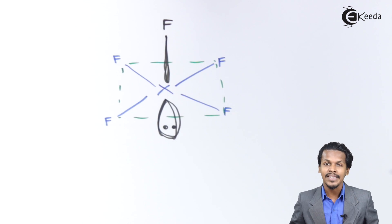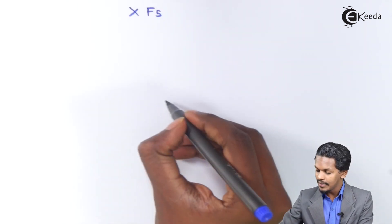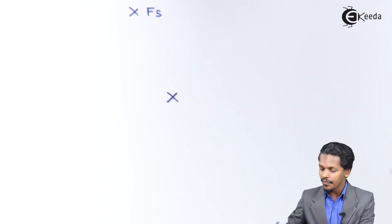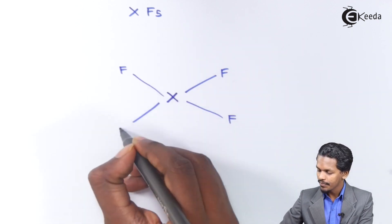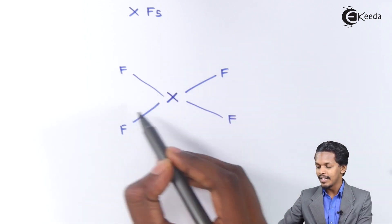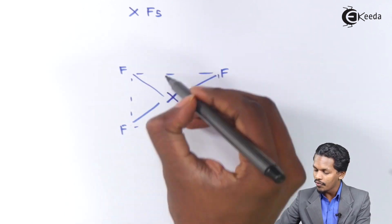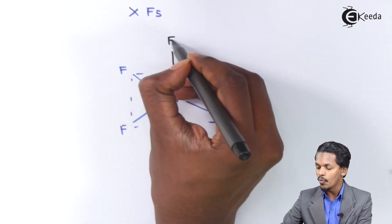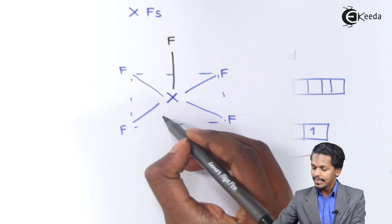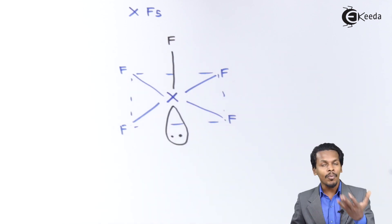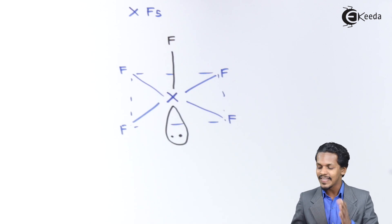So the structure of XF₅ is square pyramidal — four fluorine atoms on the plane at 90° to each other, one fluorine above, and the lone pair of electrons below the plane. This gives a square pyramidal structure rather than a full square bipyramidal geometry.